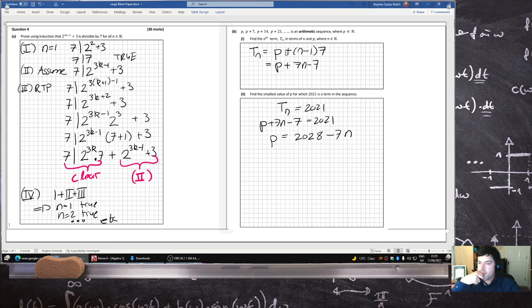The smallest value of p will be the biggest value of n. How many times does 7 go into 2028?